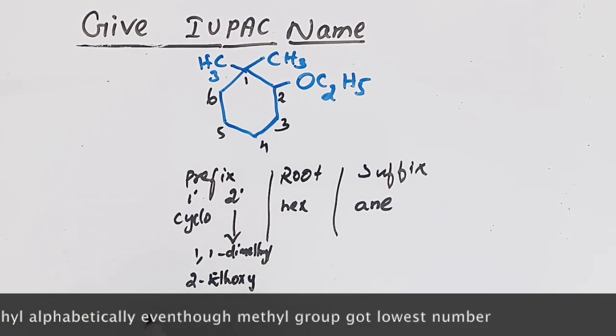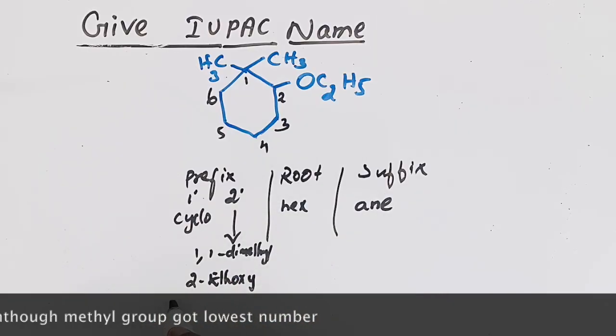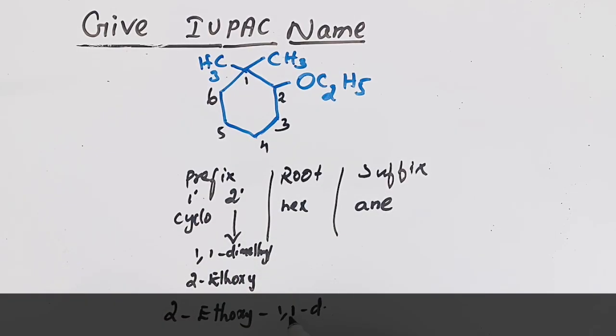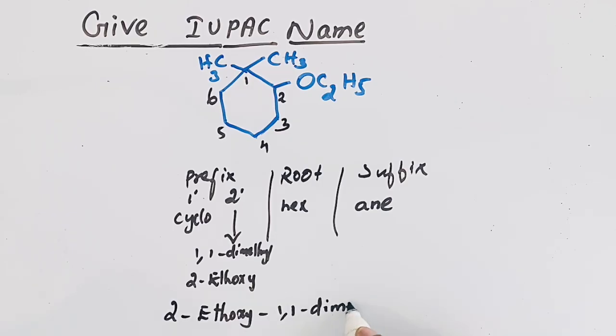So we can name the compound using this format: 2-ethoxy, then 1,1-dimethyl, then cyclohexane. 2-ethoxy-1,1-dimethylcyclohexane is the IUPAC name for the given ether. Thanks for watching.